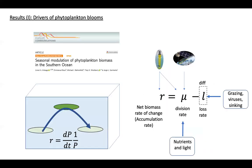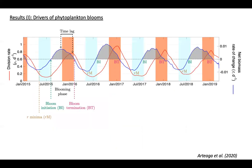The first study I want to focus on is the seasonal modulation of phytoplankton biomass in the Southern Ocean. We estimate the net biomass rate of change — the accumulation rate — using biomass estimates from the bio-optical instruments on the floats. The phytoplankton division rate is modeled using the CBPM with float-derived biomass and surface irradiance from satellites, since the SOCCOM floats I analyzed do not have irradiance sensors. We can also estimate the loss rate as the difference between the accumulation rate and the phytoplankton division rate.